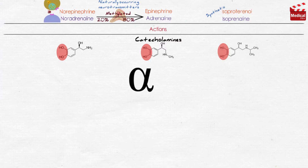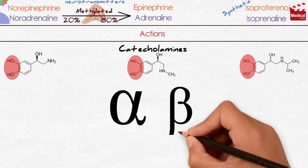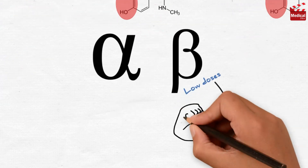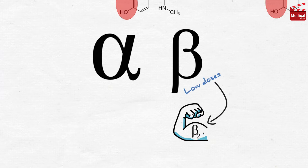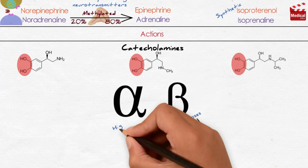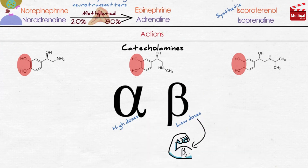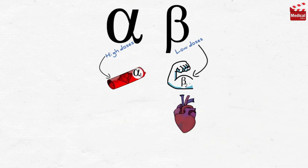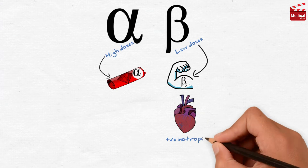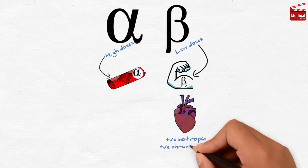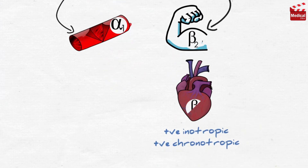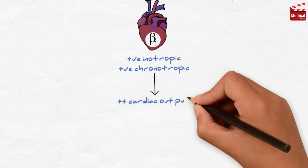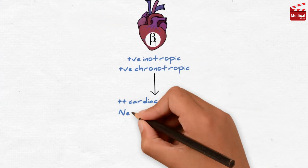Epinephrine interacts with both alpha and beta receptors. At low doses, beta effects predominate, meaning vasodilation in skeletal muscle blood vessels, whereas at high doses, alpha effects predominate, which represents vasoconstriction of blood vessels. Epinephrine strengthens the contractility of the myocardium and increases heart rate by acting on beta-1 receptors in the heart. Therefore, cardiac output increases, and the myocardium will need more oxygen to work.